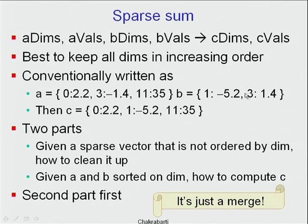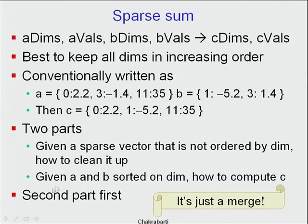Dimension 11 transfers to C since there's no dimension 11 in B. So adding two sparse vectors means aligning their dimensions and adding element-wise. Since they are in sorted order, this is just a merge. There are two parts: first, given an unsorted sparse vector, clean it up; second, given A and B already sorted on dims, compute C. We'll look at the second problem first.